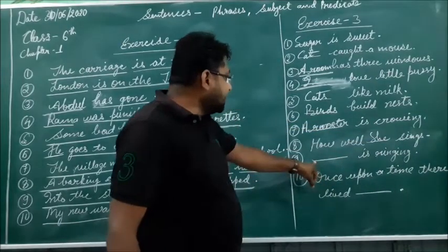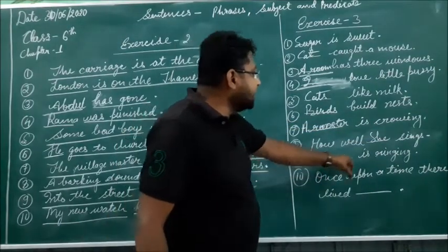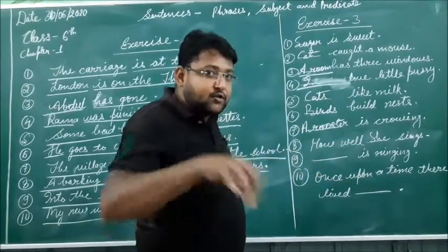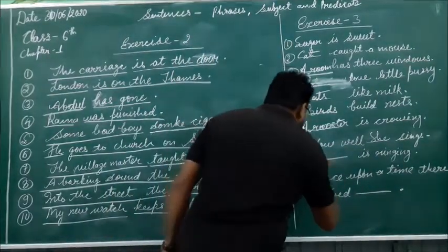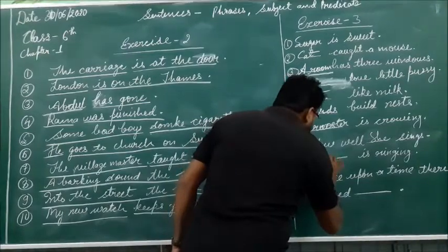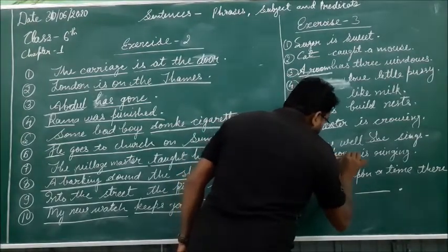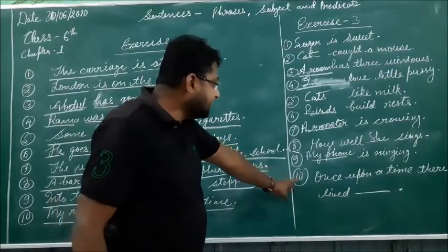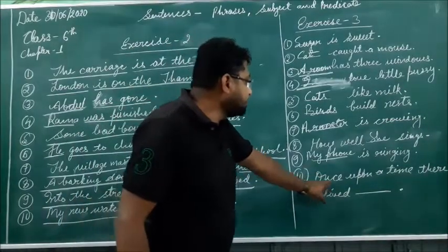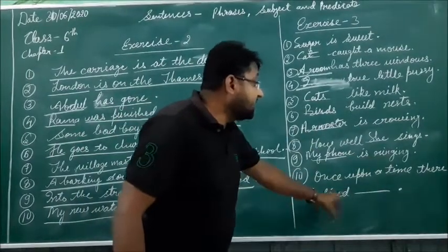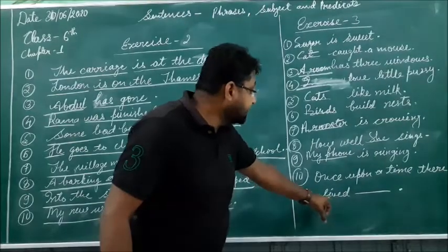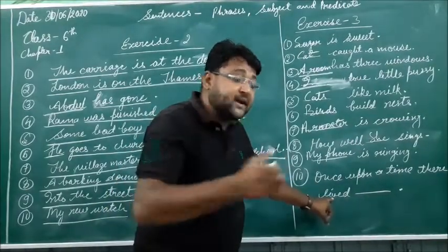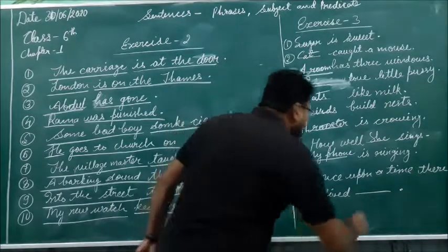In the ninth sentence, 'Dash is ringing' — 'My phone is ringing.' In the last tenth sentence, 'Once upon a time there lived' — so 'lived' is the verb; after that you have to fill the predicate: 'Once upon a time there lived a man.' Thank you, students.